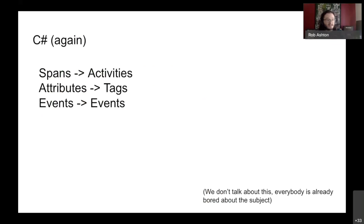If you look at the C# documentation it refers back and says: spans are activities, attributes are tags, and events are still events. Don't worry about it - the decision has been made and it doesn't matter much. Underneath the hood things will still be talking in terms of the concepts we've already mentioned. Given you are all .NET developers, the chances are you're already doing things with activities, tags, and events. You're already using OpenTelemetry if you're using activities in C#. Cool beans.